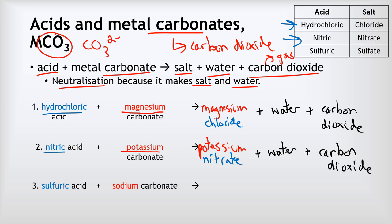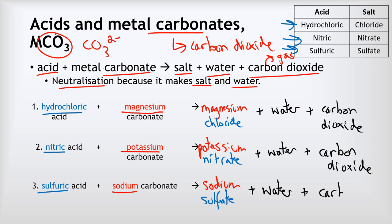Last example: sulfuric acid reacting with sodium carbonate. Sodium carbonate gives us the cation — sodium — so it's going to be a sodium salt. Sulfuric acid produces sulfate salts, so this is sodium sulfate. Because it's a neutralization reaction we make water, and because we used a carbonate base, we also make carbon dioxide.